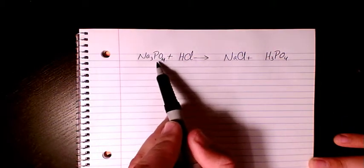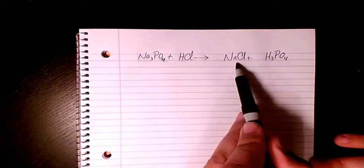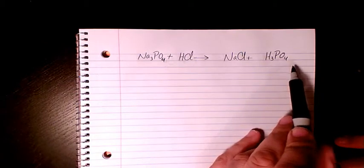Sodium phosphate Na3PO4 plus HCl hydrochloric acid gives NaCl sodium chloride and H3PO4, which is phosphoric acid.